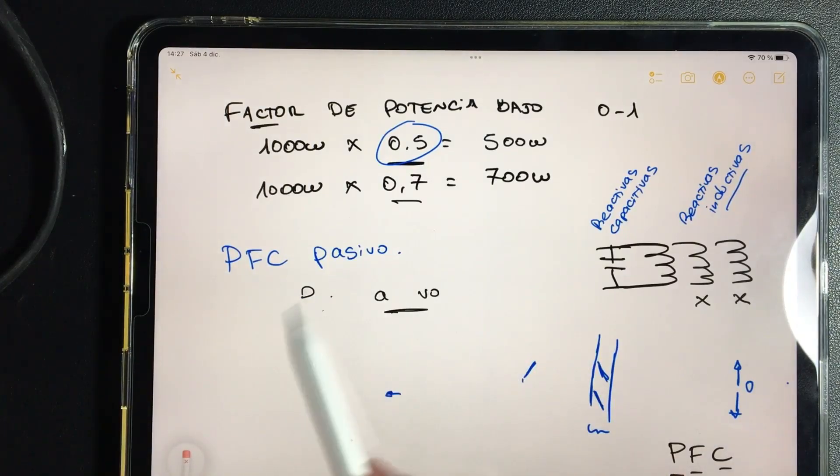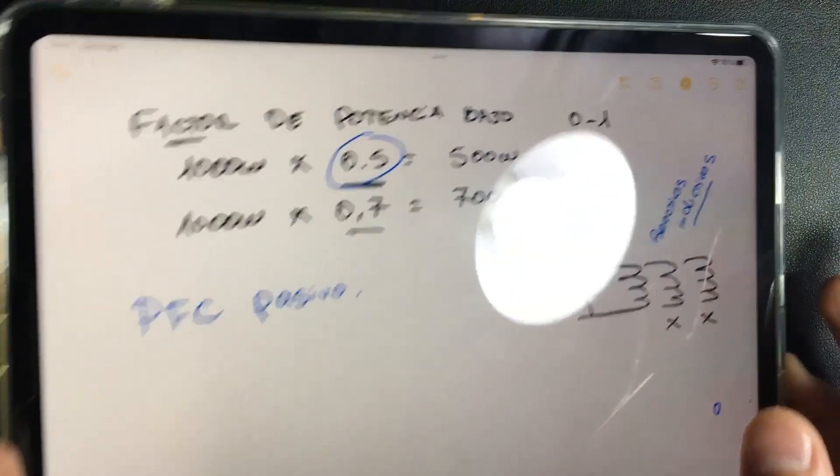In this video, we will see a small diagram, very simple, and analyze how a PFC circuit is formed, which is always inside the source.